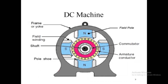The field poles may be made using permanent magnets or a DC supply. A commutator is used to convert the AC produced by the armature winding into DC output. The commutator helps extract the supply from the armature winding and convert it from AC to DC.